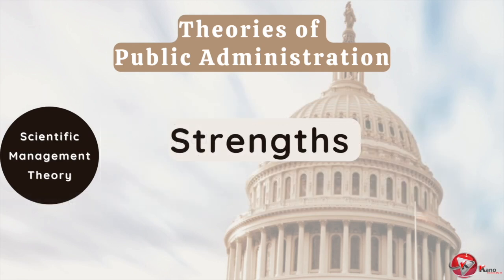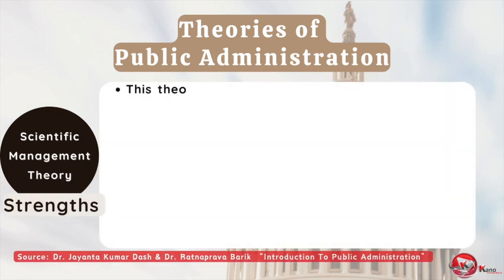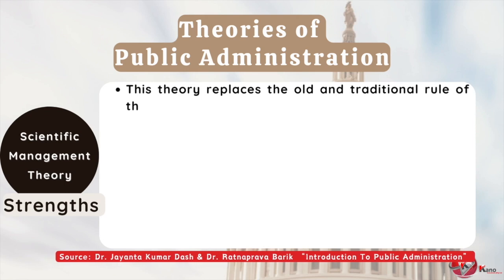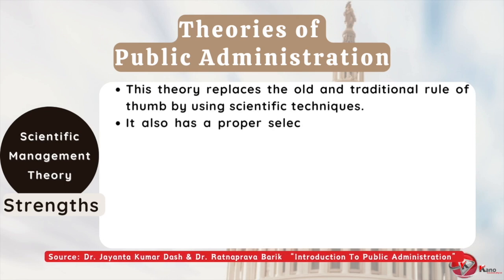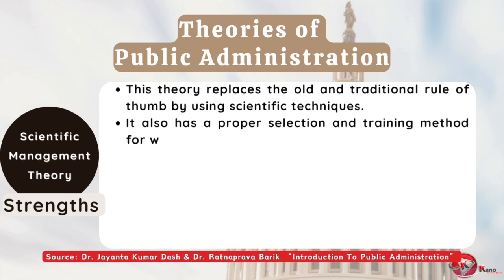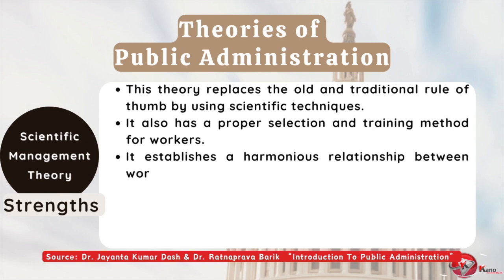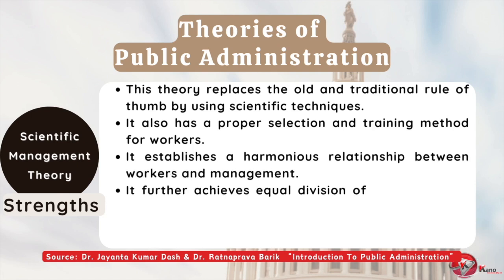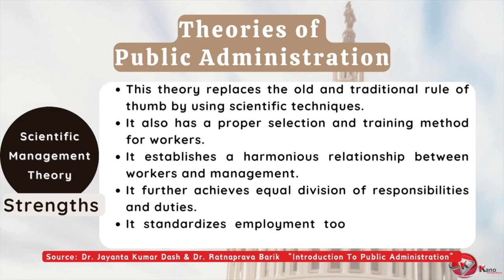Some of the key strengths of the scientific management theory are as follows. This theory replaces the old and traditional rule of thumb by using scientific techniques. It also has a proper selection and training method for workers. It establishes a harmonious relationship between workers and management. It further achieves equal division of responsibilities and duties, and standardizes employment tools, equipment, and methods.